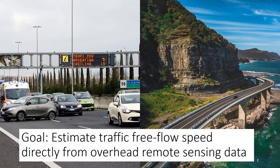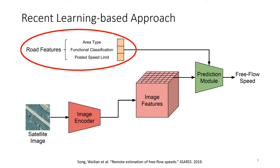While free flow speed has been traditionally estimated using geometric road features such as lane width, lateral clearance, median type, and access points, these features are not always available or expensive to collect. As a result, estimating free flow speed on large scales requires methods to take advantage of remote sensing data. In the state of Kentucky, for example, only 35% of all roadway miles have this road data available.